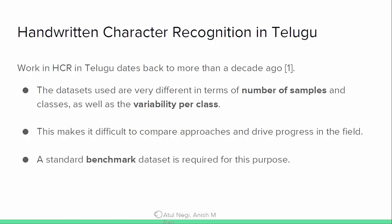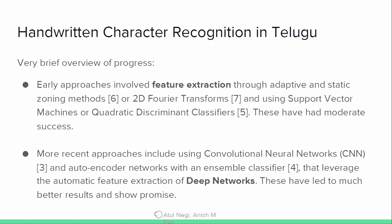There are also matras, and collecting the entire set of vowels plus consonants and matras is not easily done in data collection. Previously, feature extraction was done with adaptive and static zoning methods, Fourier transforms, support vector machines, and things like that. More recently, for printed OCR, CNNs and autoencoders have been used for automatic feature extraction.